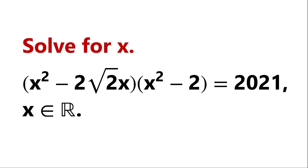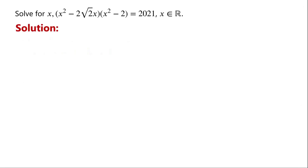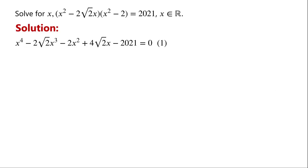Solve this quartic equation where x is a real number. By expanding and rearranging the equation, we have — and we label this as equation 1. This is a quartic equation which has both integer and non-integer coefficients, so we cannot use the rational root theorem to solve this equation.